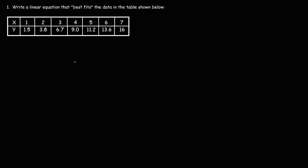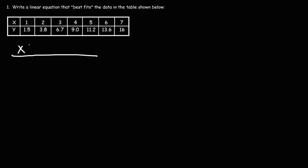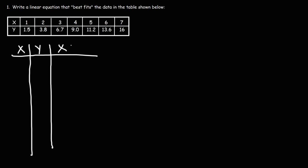The first thing we're going to do is create a table with four columns. The first column is x, the second column is y, the third column will be the product of x and y, and the last column will be x squared.